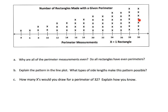The idea is we've got a whole bunch of perimeters here, a perimeter of 4 all the way up to a perimeter of 30, and the x's represent how many different rectangles we were able to build with that particular perimeter. For example, a perimeter of 4, we were only able to build 1 rectangle, whereas a perimeter of 30, we were able to build 7 different rectangles.